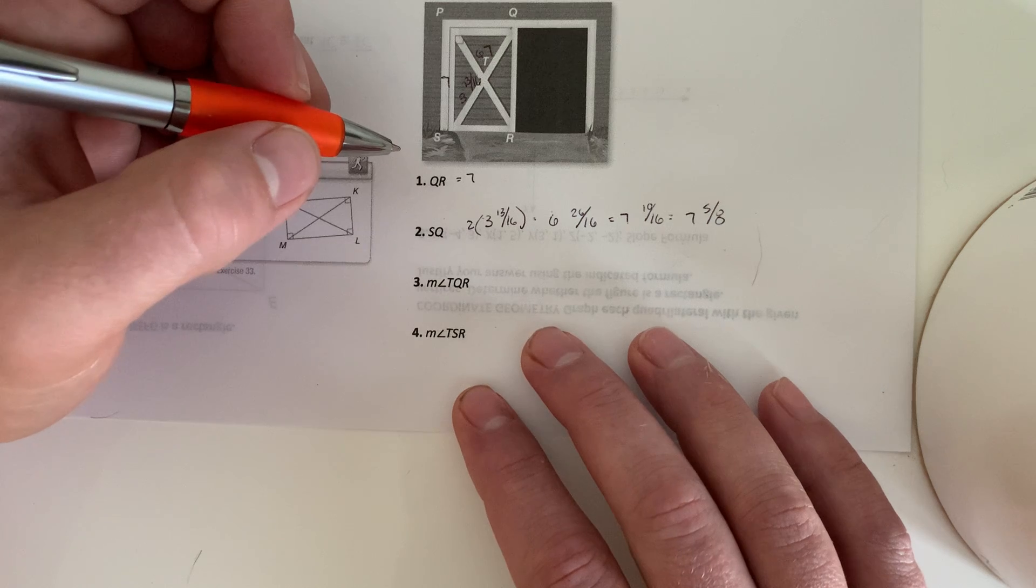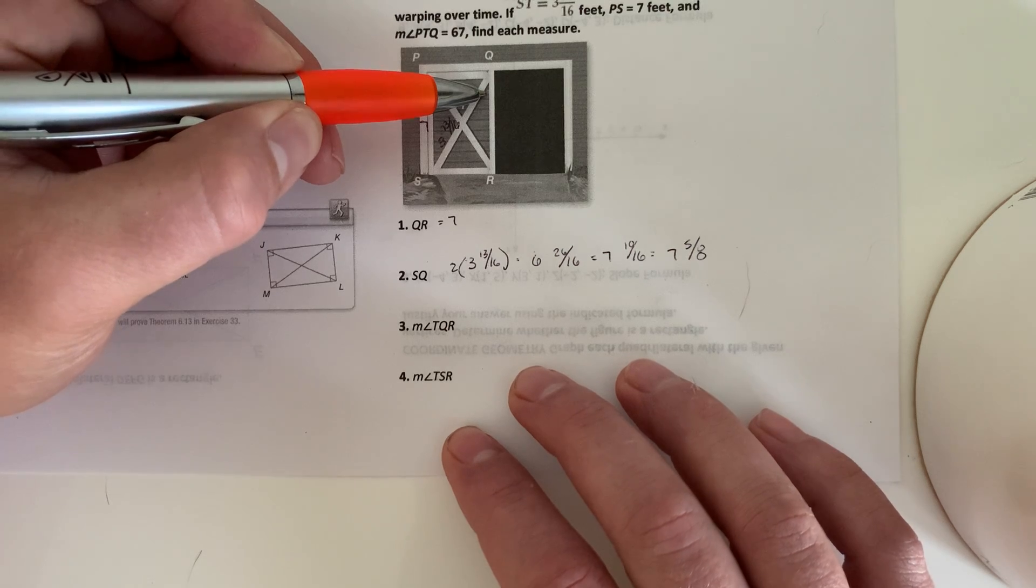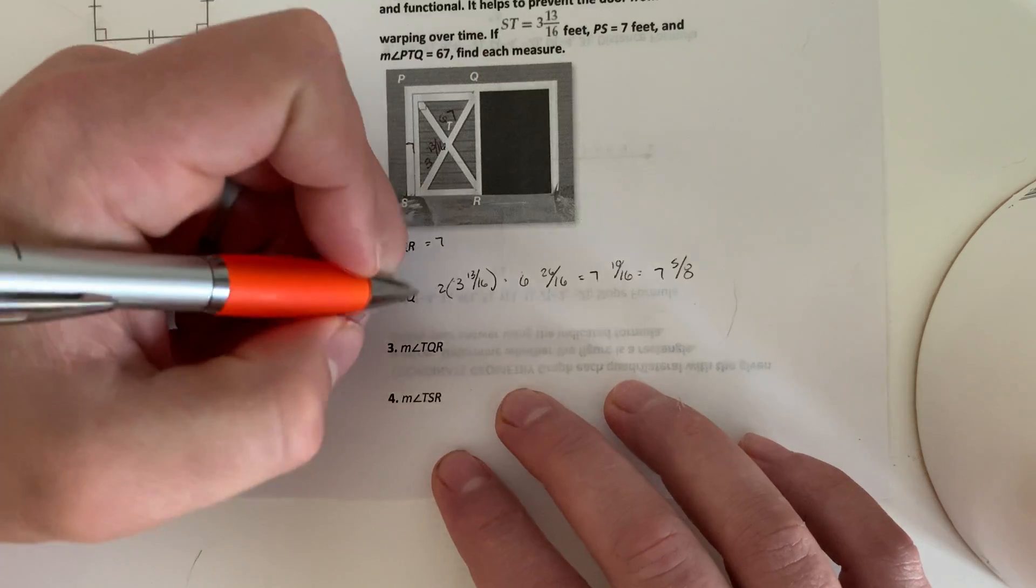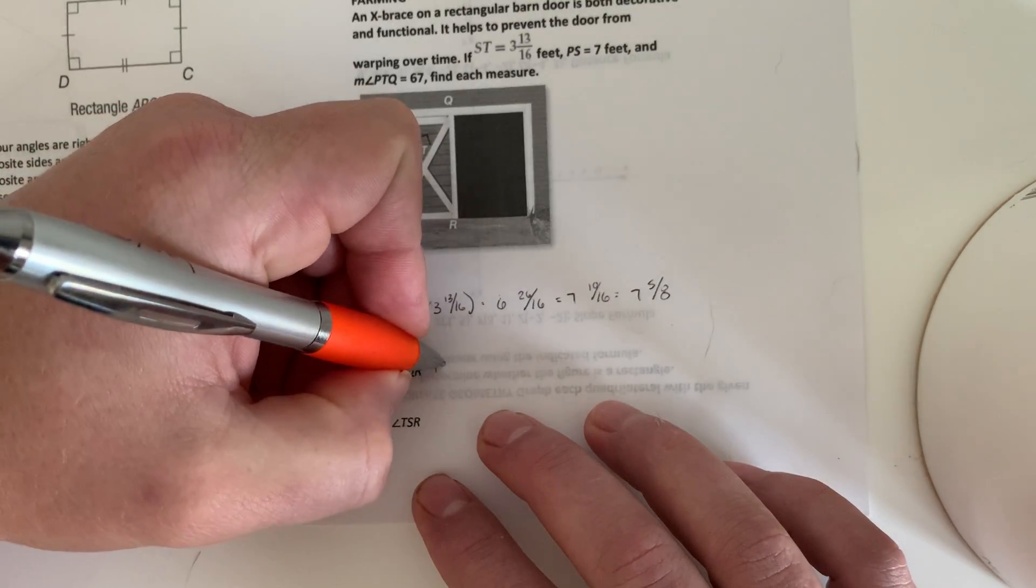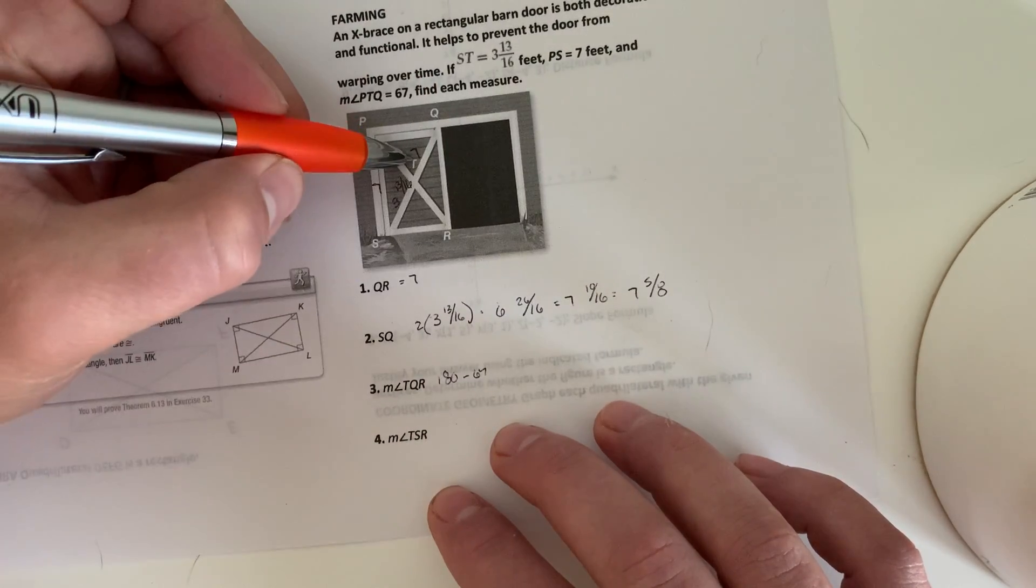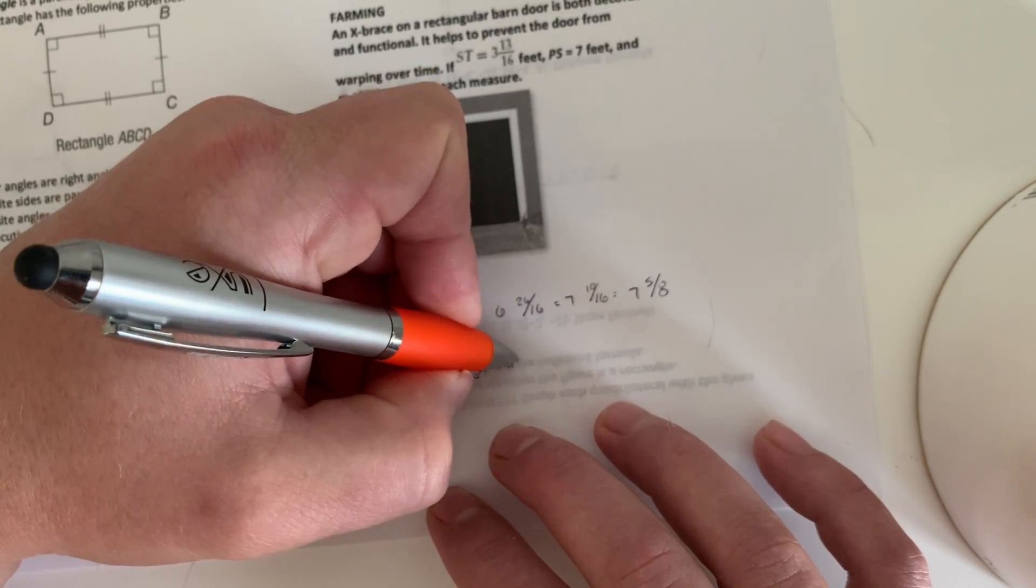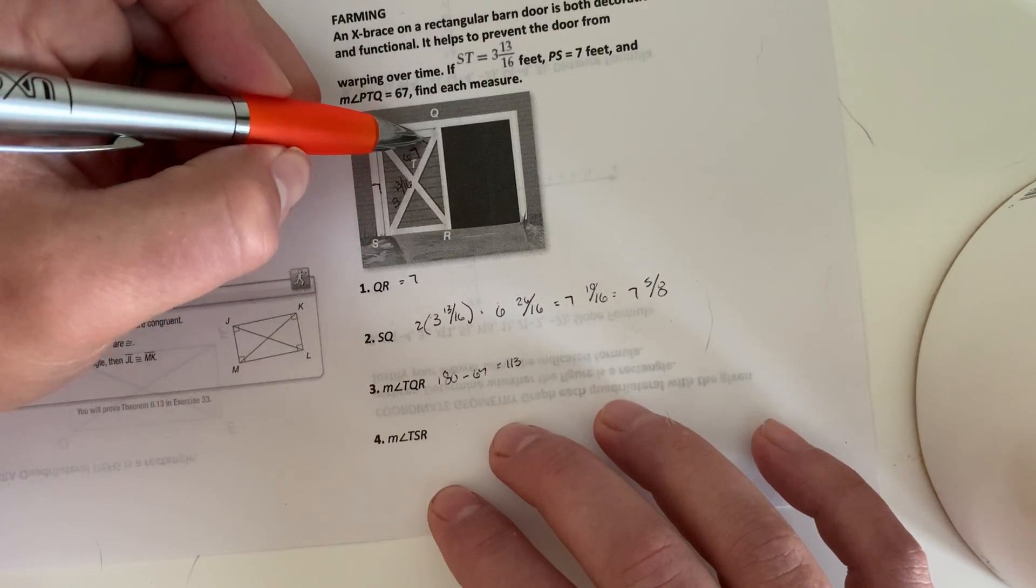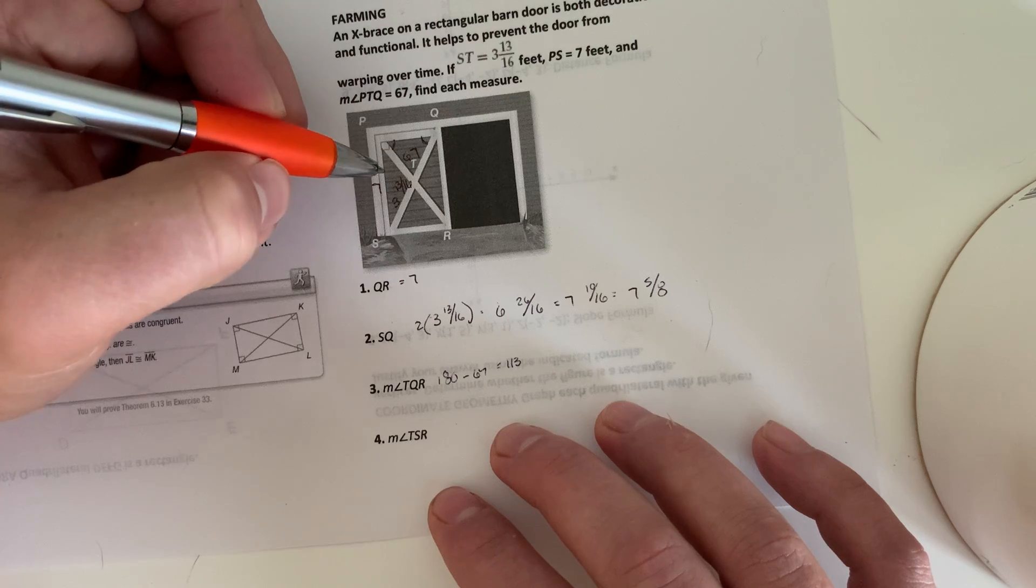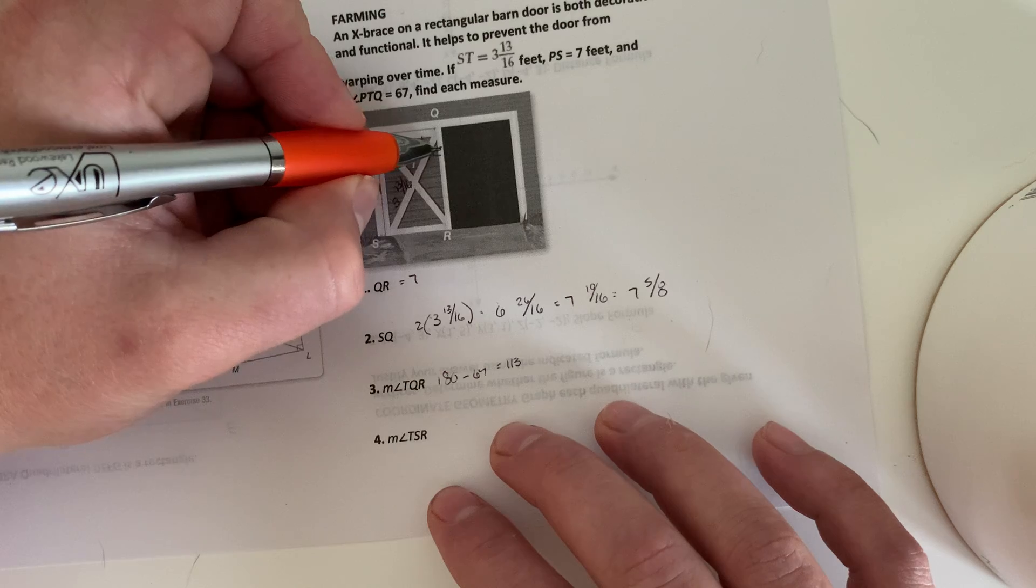Angle TQR. TQR is this side right here. All right, so we would do 180 minus 67, because that's our angle right there, which would give us 113. And then we know that this angle will be equal to this angle. And we're looking for TQR, which would make this angle congruent as well. Excuse me, this angle.